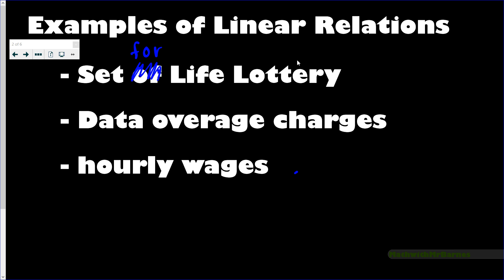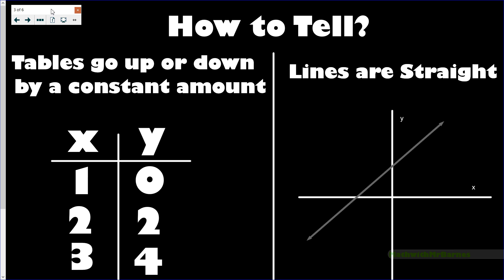There are literally a billion real-life examples of linear relations — cost of a taxi, cell phone charges, and many more. Now, how do you tell if something's linear? Besides the definition, most of you will see tables or graphs in class. If you have a table and the y value goes up or down by a constant amount, that means it's linear. We always have to check first that x also goes up by a constant amount.